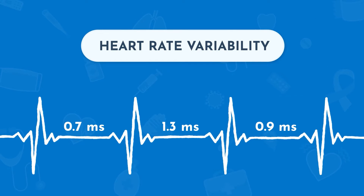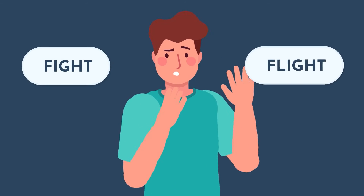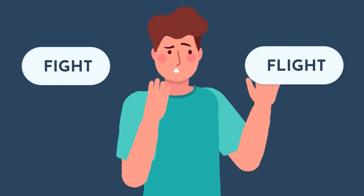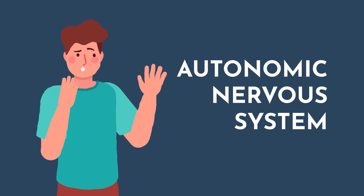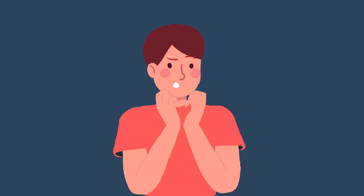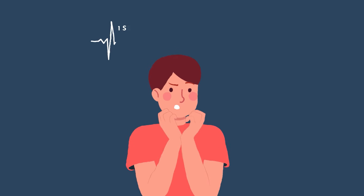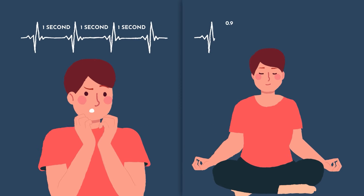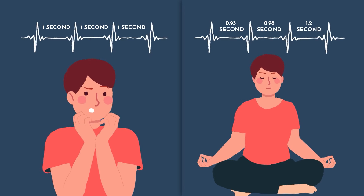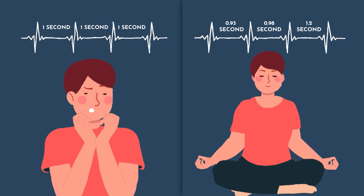Heart rate variability gives us insight into your fight-or-flight system — where your body is from what we call the autonomic nervous system. You have this part that revs you up and this part that cools you down. If you're stressed, you will have a lower heart rate variability. If you're relaxed and in a rested mode, you have a higher heart rate variability. So as you track these metrics, you want to see your heart rate variability trending higher rather than lower.